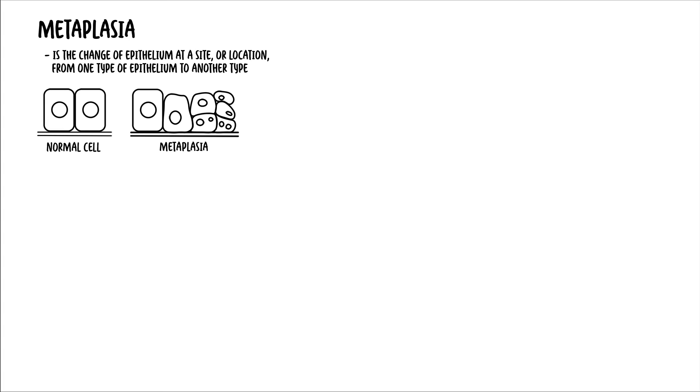The final type of cellular adaptation is metaplasia. Metaplasia is the change of the epithelium at a site or location from one type of epithelium to another type. In metaplasia, the epithelium is normal in appearance but in an abnormal location.